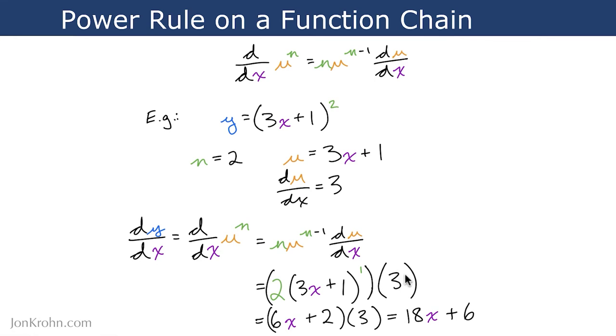Then multiplying through, so 3x plus 1 to the power of 1, that's just 3x plus 1. And we can multiply each of these terms by 2, which gives us 2 times 3x is 6x, and 2 times 1 is 2. And then finally, we can multiply this 3 in. 3 times 6x is 18x, and 3 times 2 is 6. The same answer that we got when working through this with two derivatives in the earlier video on advanced exercises on derivative rules.